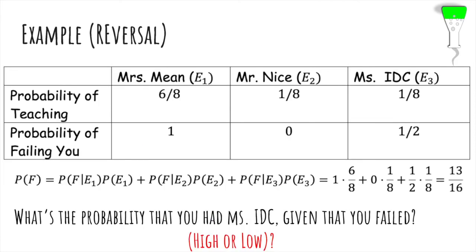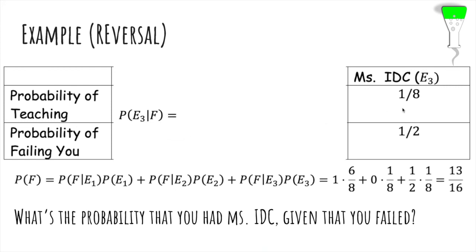Now we can ask a question reversed: What's the probability that we had Ms. I-don't-care given that you failed? Is it high or low? It turns out that's probably low, because if you failed, it was due to Mrs. Mean most likely, not Ms. I-don't-care.